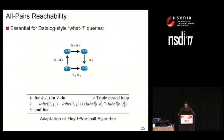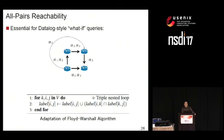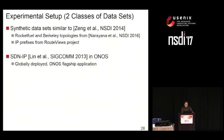Before the experimental evaluation, I want to mention another side effect of having atoms: it makes it almost trivial to check all-pairs reachability properties. That's essential for answering Datalog-style what-if queries, previously explored at NSDI through works such as NOD and Batfish. The idea is to adapt the well-known Floyd-Warshall algorithm to compute the transitive closure of the graph we are incrementally maintaining, introducing extra edges to represent atoms traveling through multiple hops — opening up new use cases.